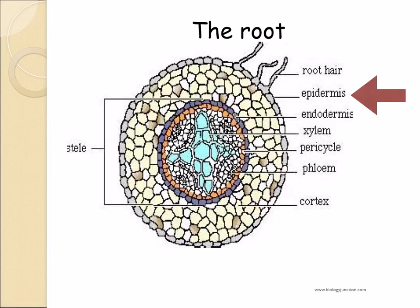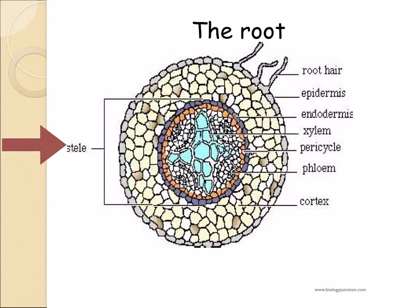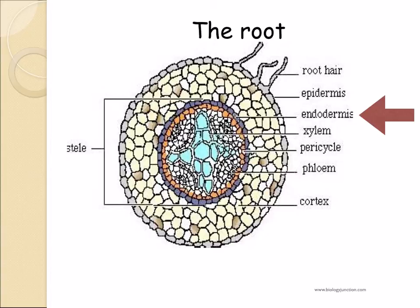Let's have a look at root anatomy in a bit more detail. The epidermis contains root hairs in young roots, and this will be replaced by a protective exodermis. The cortex is made of parenchyma, which may function for storage. The xylem and phloem are central and form the stele. The pericycle is meristematic, which we'll look at in a moment. The endodermis is one cell thick and has a layer of suberin which forms the Casparian strip. We will discuss this in more detail when we look at transport of water through the root.